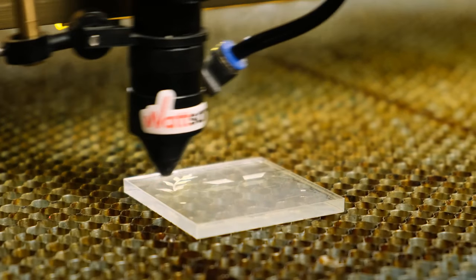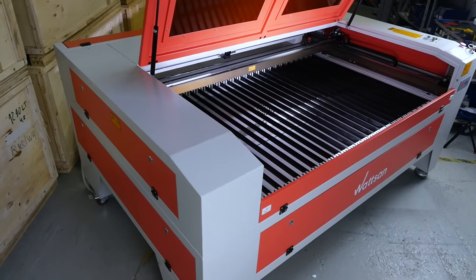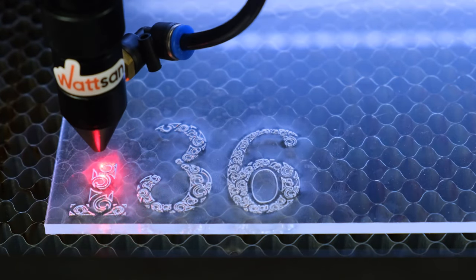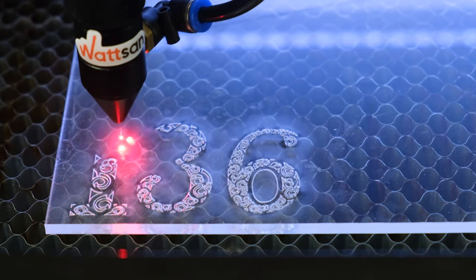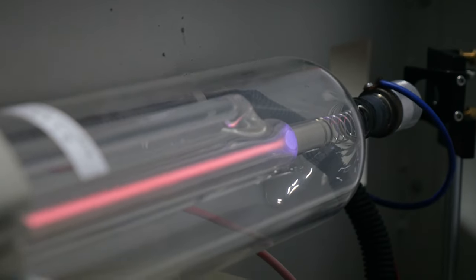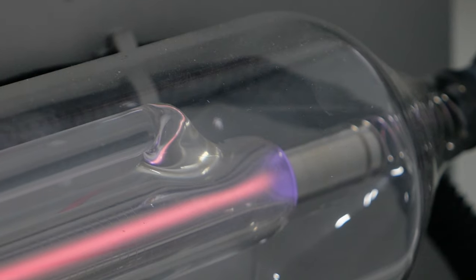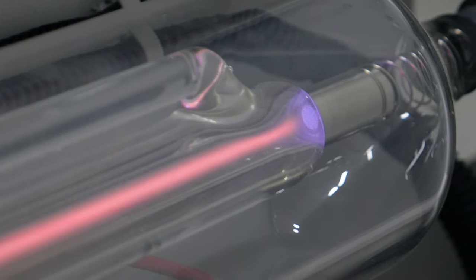For example, if your main task is engraving, then you should give up on machines with large working fields, since you will significantly lose in the speed of engraving. It is also worth refusing machines with a high power of the laser tube, because the more powerful the laser tube, the less it fits for engraving.